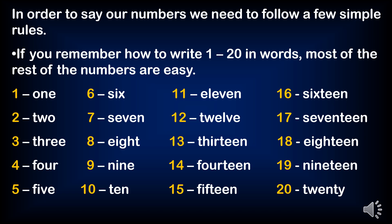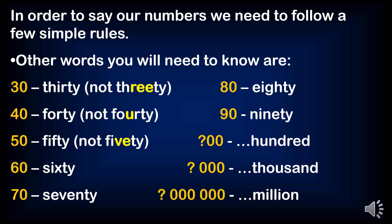In order to say our numbers, we need to follow a few simple rules. If you remember how to write 1 to 20 in words, most of the rest of the numbers are easy. 1, 2, 3, 4, 5, 6, 7, 8, 9, 10, 11, 12, 13, 14, 15, 16, 17, 18, 19, 20.